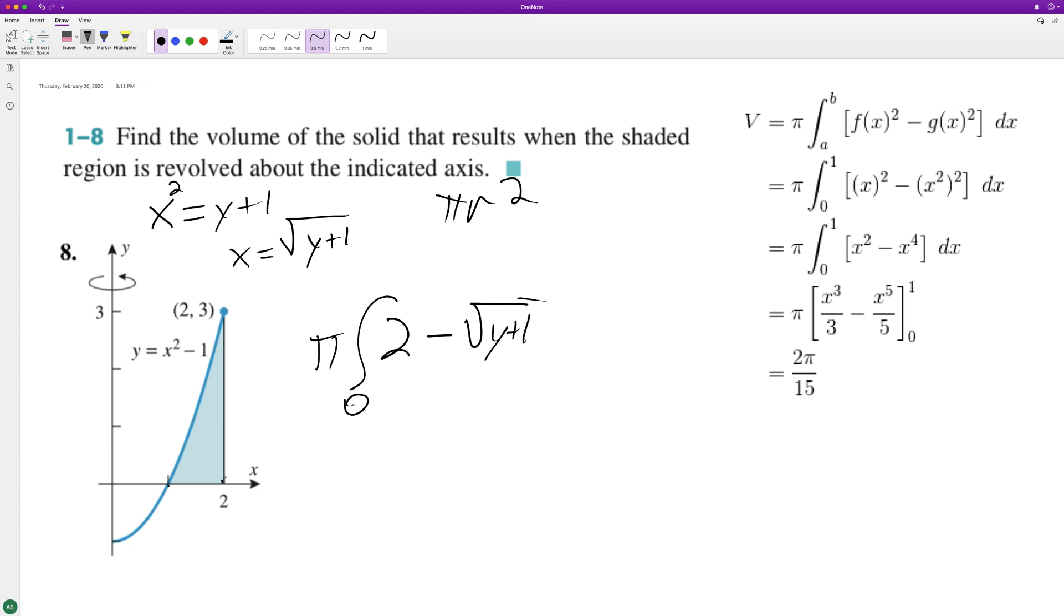We're going from, it looks like zero to up here three. We're not using x one to two, we're using y zero to three. That needs to be made clear. So pi, it's equal to zero to three, and square both of these. We get four minus y plus one.